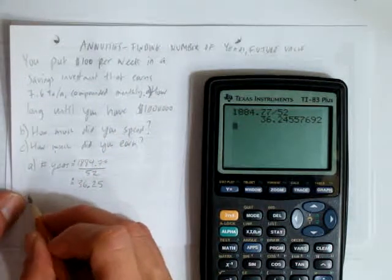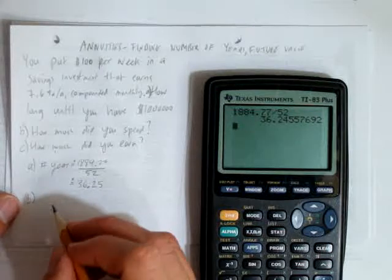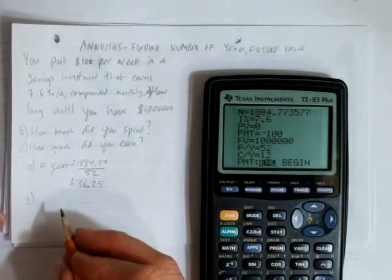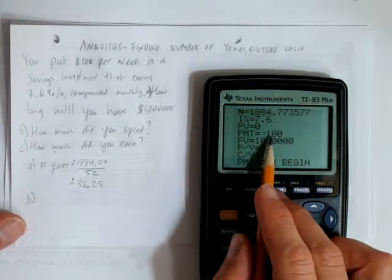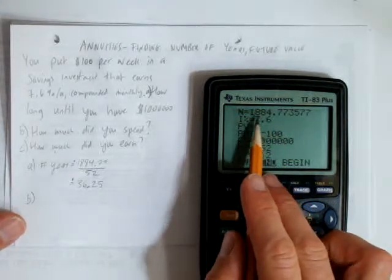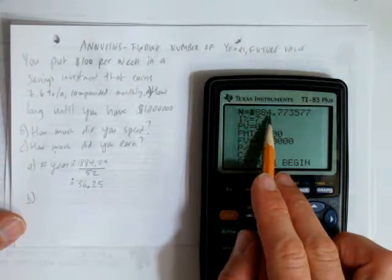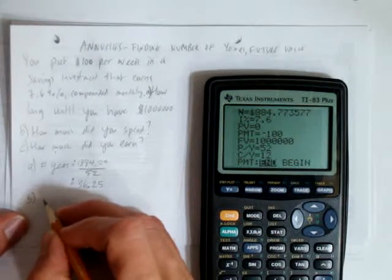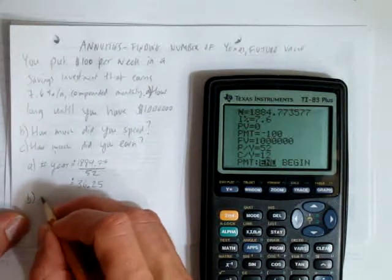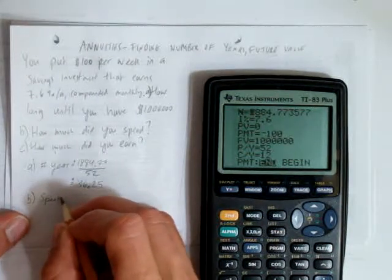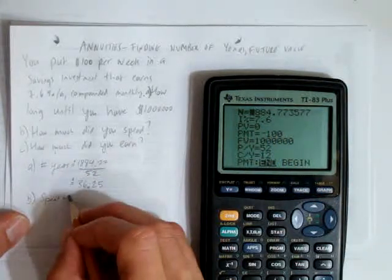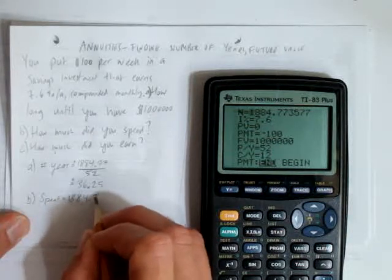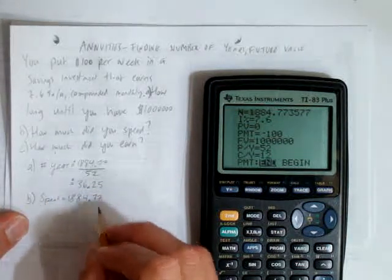Part B is how much did we spend. Well, let's go back to our TVM solver, apps, enter, enter. How much did we spend? Well, we made payments of $100, and we did it 1,884.77 times. So we'll round to, let's round that. So our amount spent equals, how many payments did we make, 1,884, let's round that to .77.